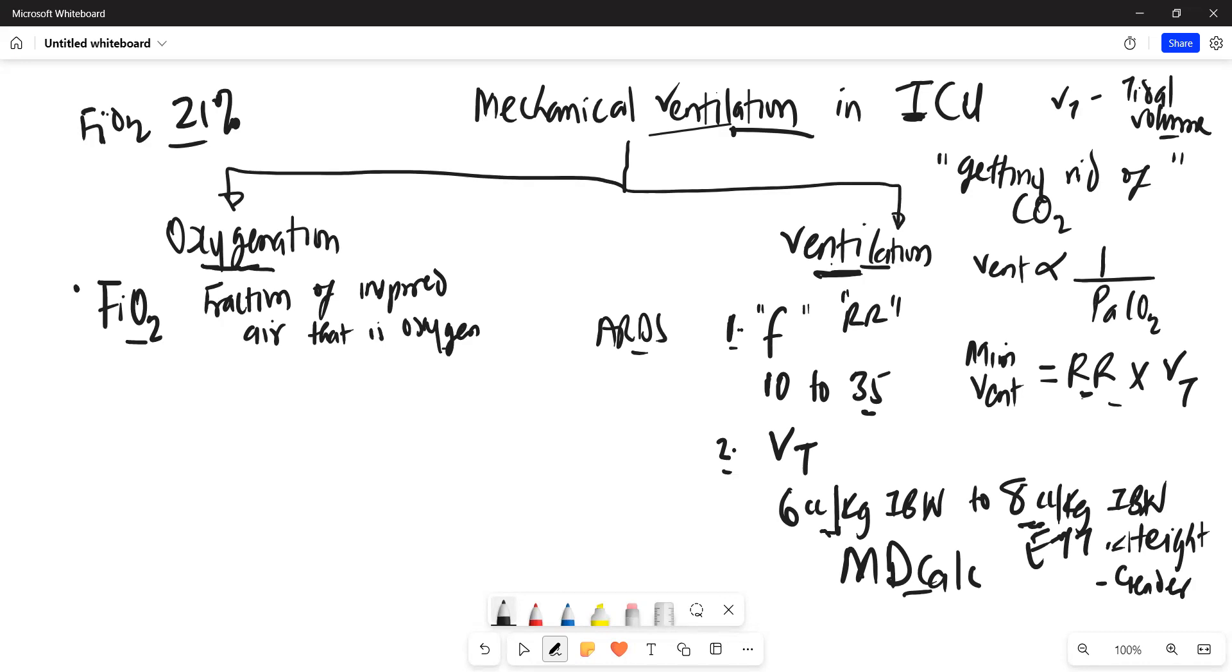So for instance, if you have somebody on 3 liters of nasal cannula of oxygen, so all you have to do to determine the FiO2 for the patient, you just multiply the 3 liters by 3, so that will be 9. And 9 plus 21, that will give us 30%. So that means the FiO2 for that patient will be around 30%. And then on the ventilator, the minimal FiO2 we normally set is what they do on room air, which is 21%. And it can go all the way to 100% on the mechanical ventilator.